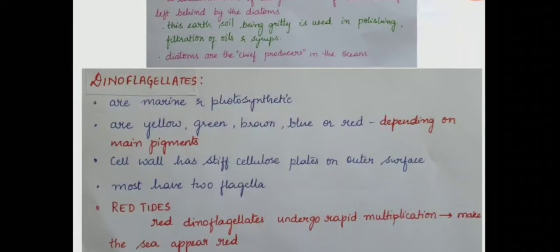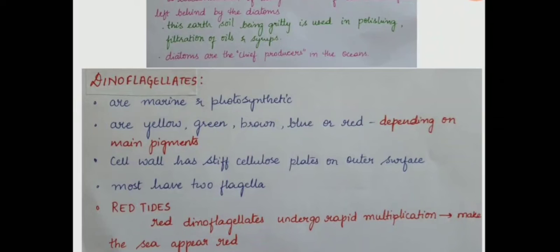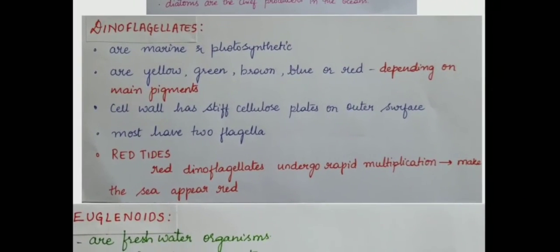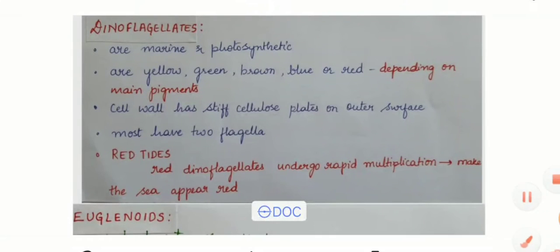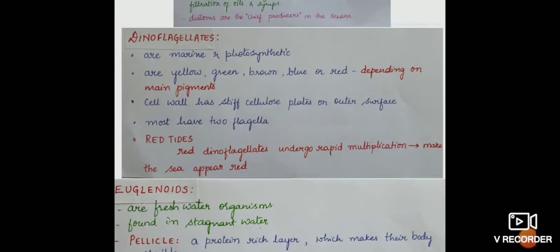Dinoflagellates are marine and photosynthetic. That means they can prepare their food on their own. They are colored depending upon their pigments. They can be either yellow, green, brown, blue or red. Their cell wall has stiff cellulose plates on outer surface. Most of them have two flagella. Red tides are sea algal blooms which include large amounts of concentration of aquatic microorganisms.